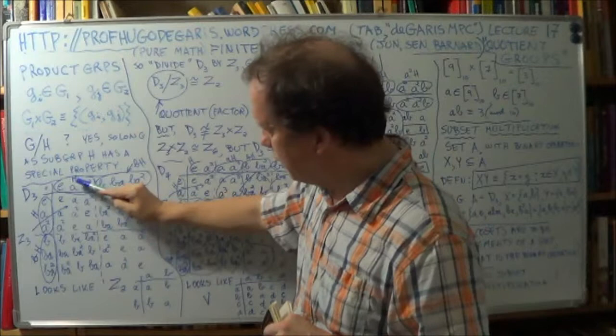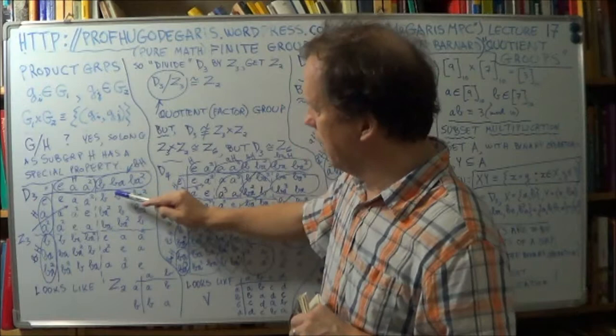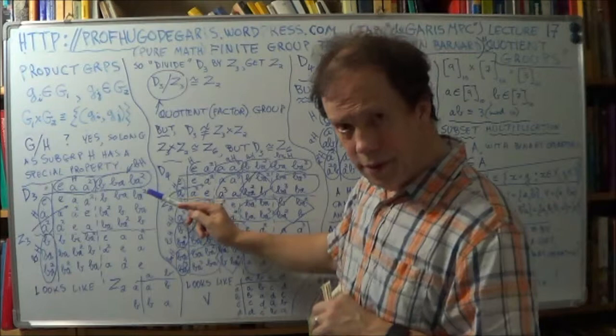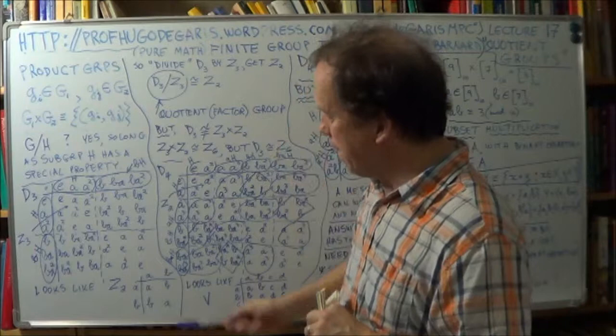And notice if that's our subgroup H, what's this? Yeah, look at it. Can you see? It's of the form BH, you know, BA A squared, B BA BA squared. That is a coset. That's a critical word. You'll probably see where I'm going already. This is a coset of your subgroup H.